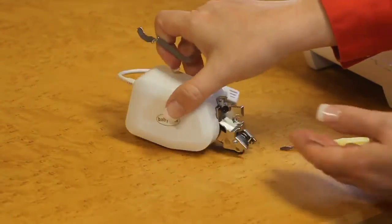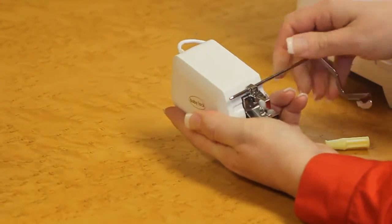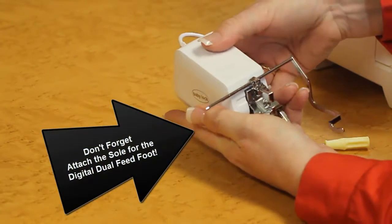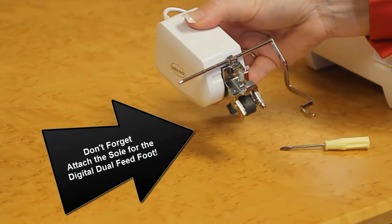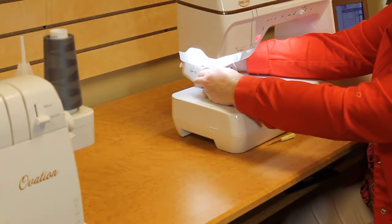Then we'll take the quilting bar and slide it into the top of the adapter. We'll take this and place it on the machine, making sure to get the foot firmly in place.